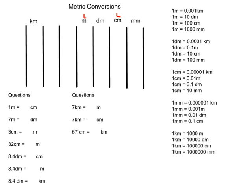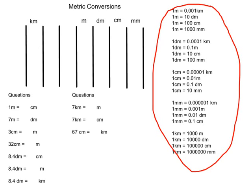The key is that the measurement is going to be the exact same thing, except the number is going to be different. We have all the different types of conversions in this chart. For example, one meter equals 0.001 kilometers, one meter equals 10 decimeters, one meter equals 100 centimeters, and one meter equals 1,000 millimeters. This is the power of 10 — every time we go up in measurement, it takes 10 of one unit to make one of the next.